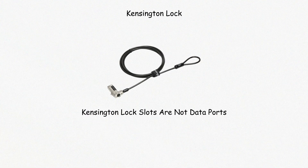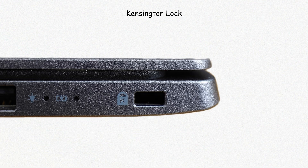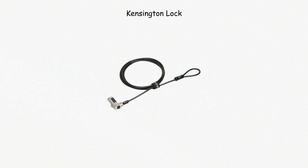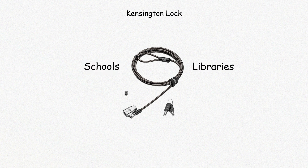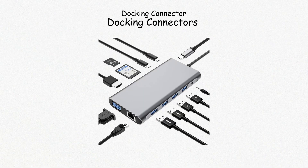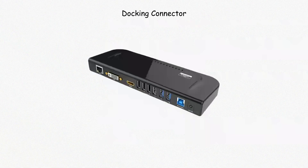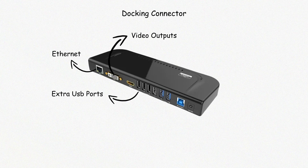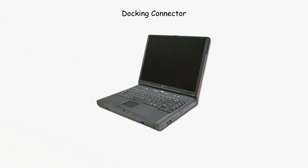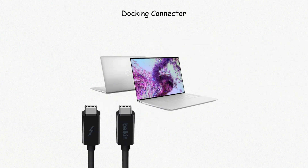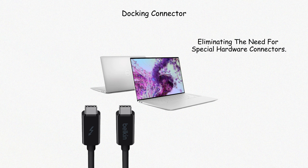Kensington lock slots are not data ports but are worth noting. They're small rectangular holes usually located on laptops or monitors. A Kensington lock is a physical security device — a metal cable and lock that prevents theft of hardware. These locks are common in schools, libraries, and public workstations. Docking connectors are proprietary ports used to attach a laptop to a docking station, which expands connectivity by providing extra USB ports, video outputs, Ethernet, and charging through one physical link. Modern setups often use USB-C or Thunderbolt ports for docking, eliminating the need for special hardware connectors.